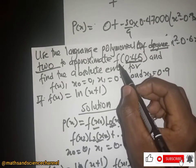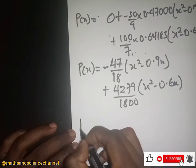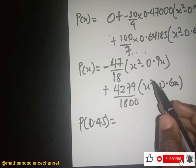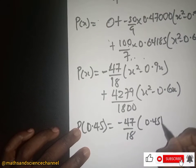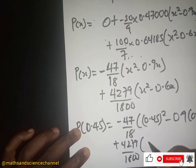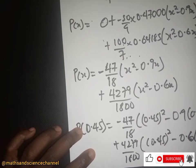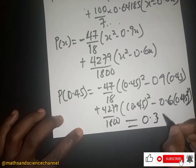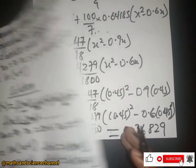The question asks us to approximate f(0.5), so we substitute x = 0.5 into p(x). We get p(0.5) = (−47/18)(0.5² − 0.9×0.5) + (4279/1800)(0.5² − 0.6×0.5). Computing this gives p(0.5) = 0.36829. This is our approximation.